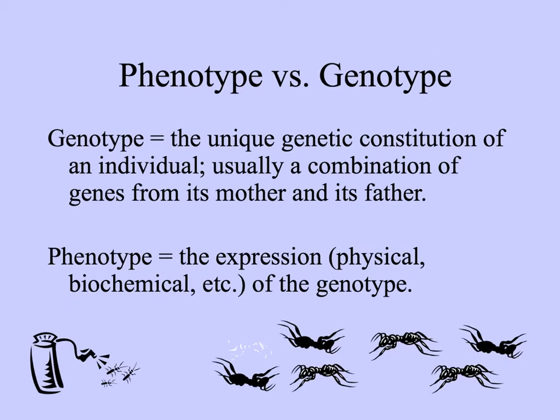You've taken genetics, so you know that the genotype is the unique genetic constitution of an individual — normally a combination of genes from an organism's mother and its father. The phenotype is the expression of the genotype: morphological, physical, biochemical, etc. This clip art shows that although these bugs might look the same, when they are sprayed with a pesticide, certain phenotypes are susceptible while others survive, so those that are more fit to existing with pesticides can persist.